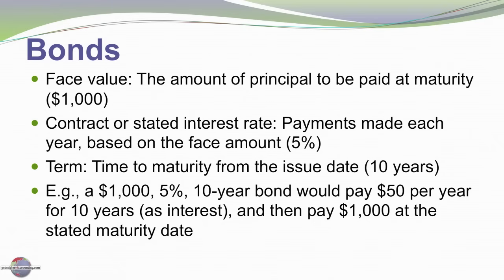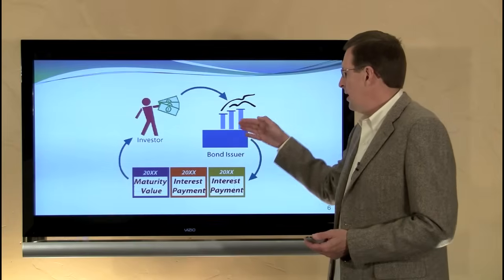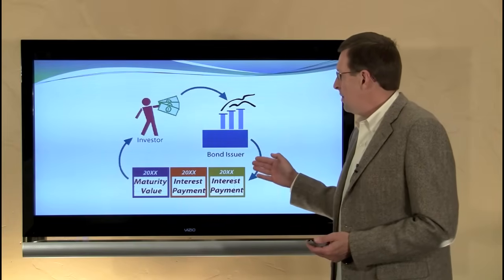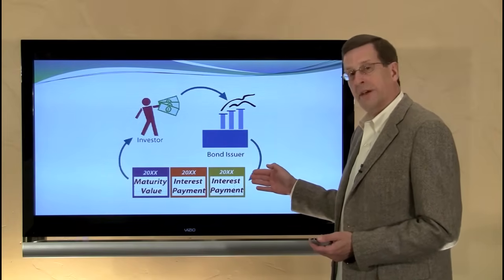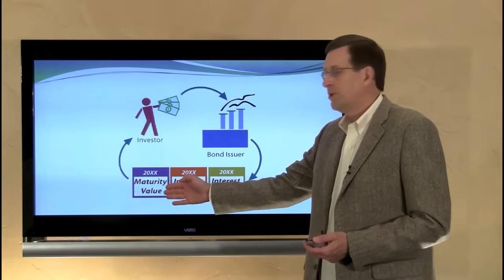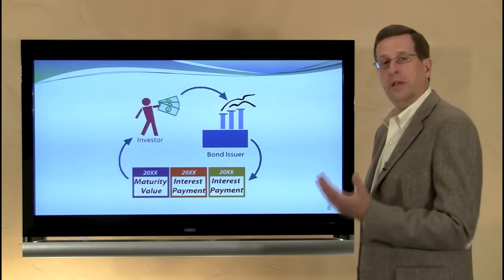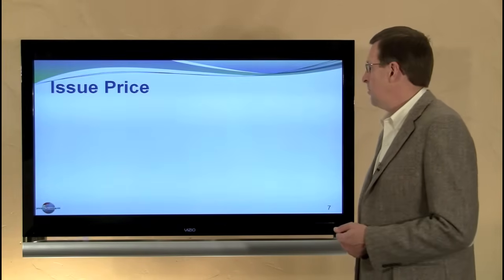Here's an example. A $1,000, 5%, 10-year bond would pay $50 per year of interest for 10 years, and then repay the $1,000 at maturity. So an investor would initially give money to the company, the company would issue the bonds to the investor, and those bonds would require periodic interest payments, and then at the maturity of the bond, the full face amount back to the investor. It's just a loan, in other words.